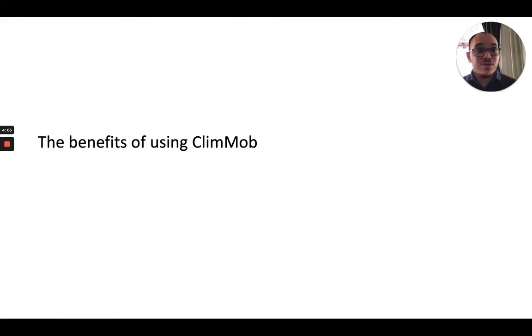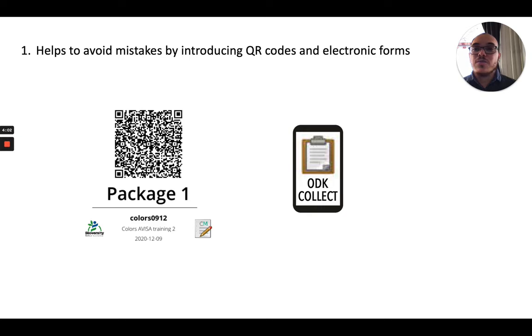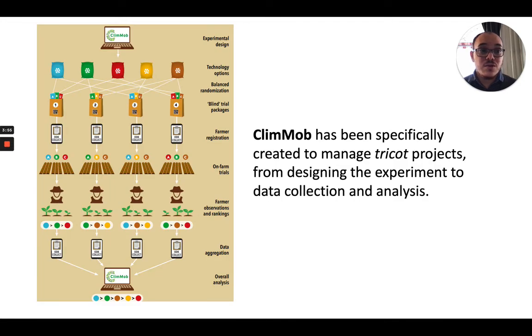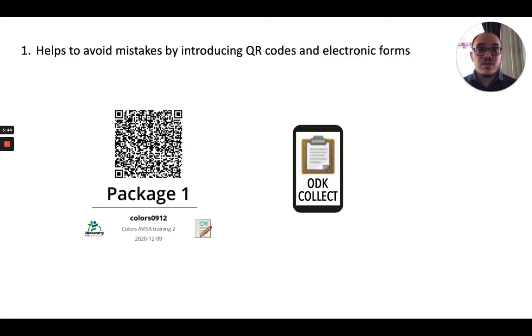These are the benefits of using Klimop. It helps you to avoid mistakes by introducing QR codes and electronic forms. For example, for each package that is distributed in the Tricot experiment, one QR code is created that is used to link the package with the data in the Klimop platform. This is done with ODK Collect.